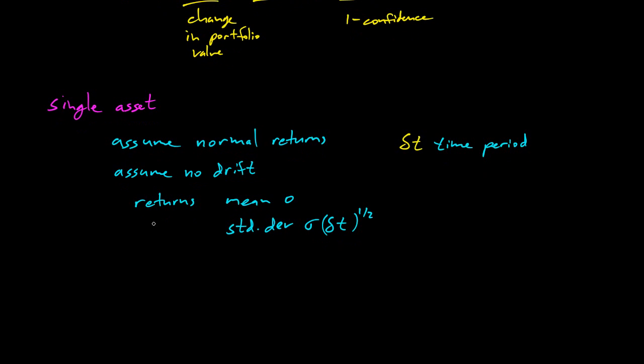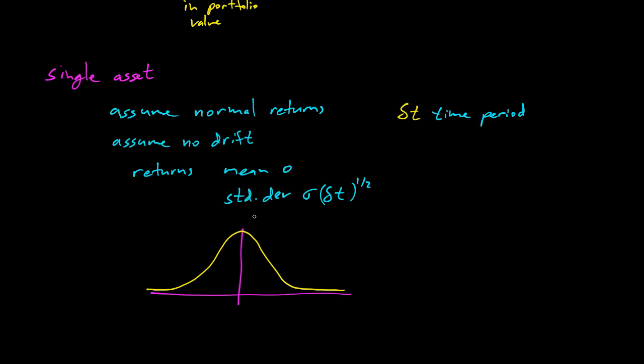Alright, so given these returns, how do we figure out the probability? So let's draw a little graph here to illustrate. So this will be a nice bell curve, and this will be returns. Whether they're equally likely to be positive or negative, this is a probability distribution here, and there's some standard deviation. So let's write, this will be units of standard deviation on the x-axis.